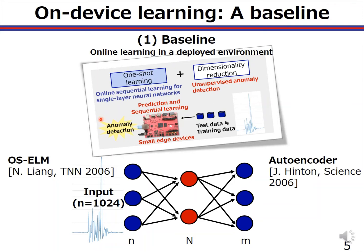This figure illustrates the baseline technology for the online frequency learning in a deployed environment. For the online frequency learning and unsupervised anomaly detection, we are using OSELM, which is Online Sequential Extreme Learning Machine algorithm. In our paper, it is combined with the autoencoder, which is a dimensionality reduction algorithm of neural networks, used for unsupervised anomaly detection. Also, we optimize these two strategies to significantly reduce the computational cost, so our contribution is a low-cost hardware design of online frequency learning and unsupervised anomaly detection.